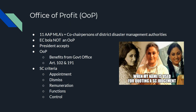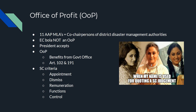Next: Office of Profit (OOP). OOP is a disqualification criteria. Recently, 11 AAP MLAs were accused of holding Office of Profit because they were co-chairpersons of District Disaster Management Authorities. The Election Commission ruled it is not an OOP, and the President accepted the EC's decision. The criteria for OOP: if any elected member derives benefits from a government office, it is a disqualification under Articles 102 and 191. The Supreme Court gave detailed criteria: if the government controls appointment, dismissal, remuneration, functions, or control — even one of these — it constitutes an OOP. A related case is that of Jaya Bachchan.